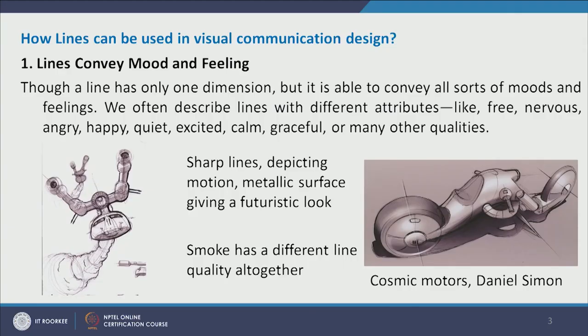We can see designs from the famous designer Daniel Simon, taken from his book Cosmic Motors. On the right-hand side is a two-wheeler design with sharp lines that convey motion. On the left-hand side is a very sketchy concept design of a spaceship. Lines can convey many adjectives: free, nervous, angry, happy, quiet, excited, calm, graceful, and so on.